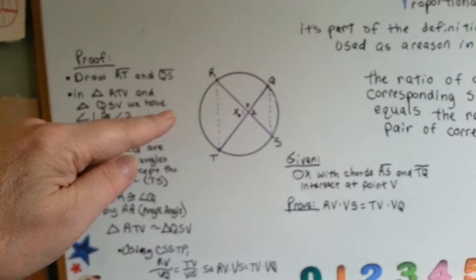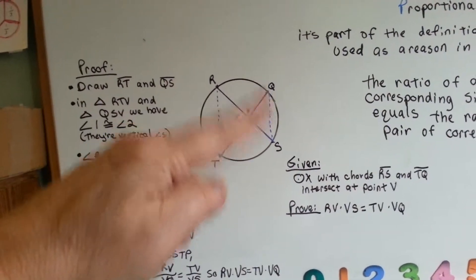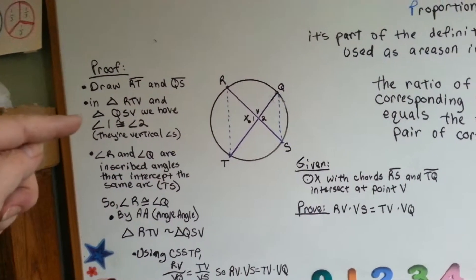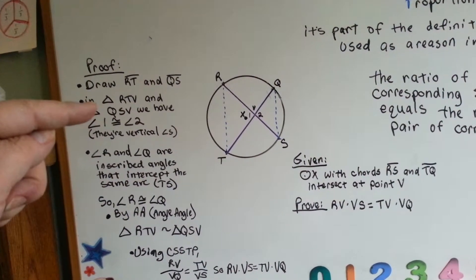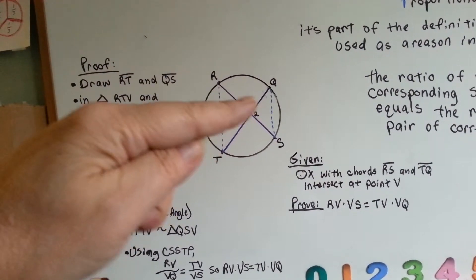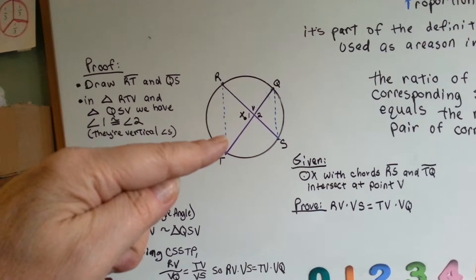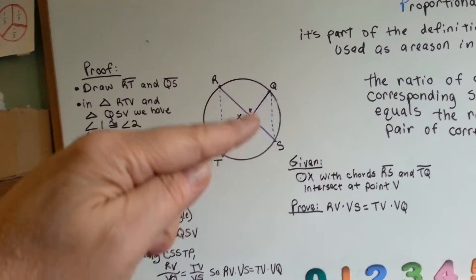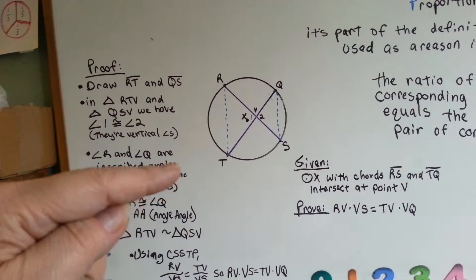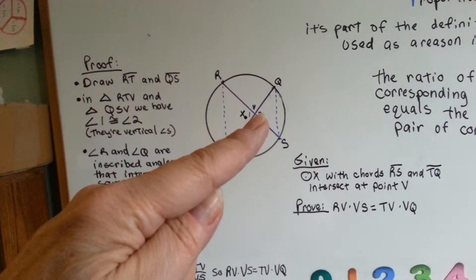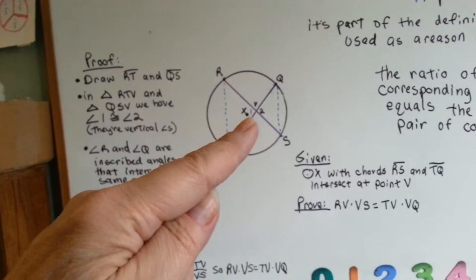We're going to draw RT and QS, those little blue dotted lines, to help us. And in angle RTV, and triangle QSV, this one, we have angles 1 and angles 2. And they're vertical angles.